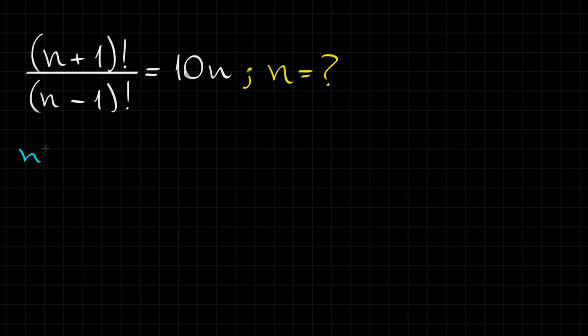Well, we know that n factorial is equal to n times (n-1) times (n-2) and so long so forth until 3 times 2 times 1, right?